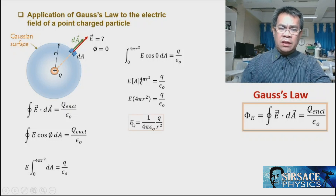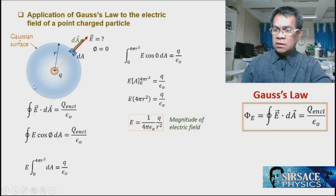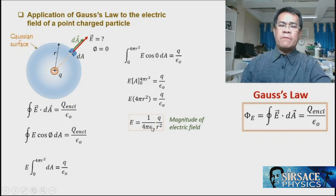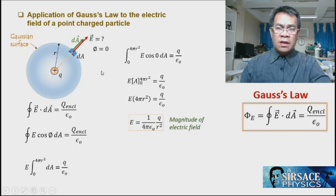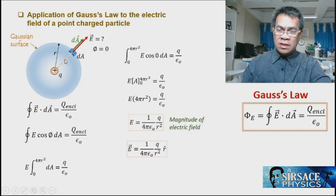Solving for E, we get E = (1 / 4πε₀) × (q / r²). This is the magnitude of the electric field at a point charge at distance r. At any point on the surface with radius r, the electric field is (1/4πε₀)(q/r²). The electric field vector is E = (1/4πε₀)(q/r²) r̂, where r̂ is the unit vector in the direction of r.